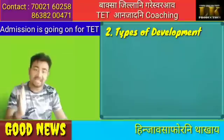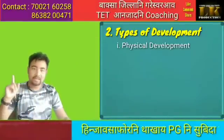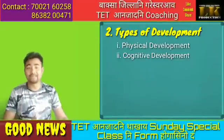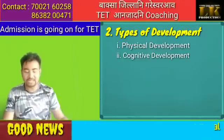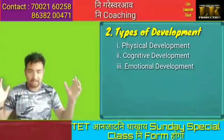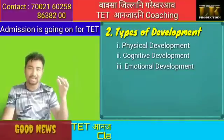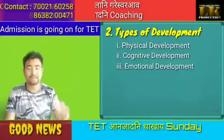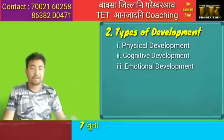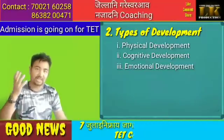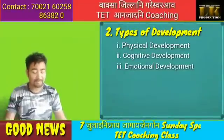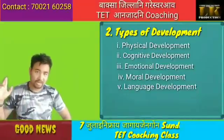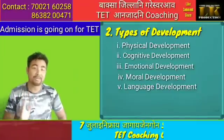Number 1 is physical development. Number 2 is cognitive development. Number 3 is emotional development. Number 4 is moral development. Number 5 is language development. The last number is social development.